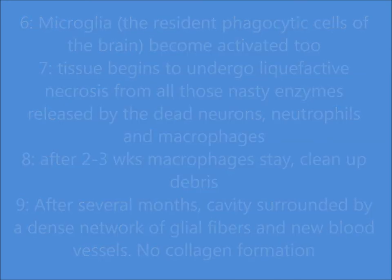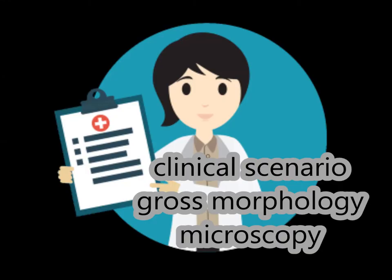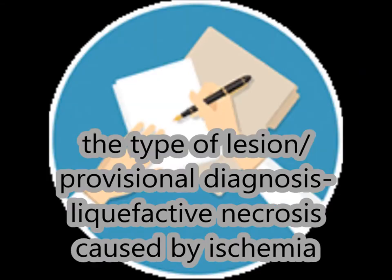After several months, a cavity surrounded by glial fibers remains — there are no collagen fibers. Taking into account the clinical scenario, gross morphology, and microscopy, the type of lesion or provisional diagnosis is liquefactive necrosis, and in the brain, ischemia is the cause of liquefactive necrosis.